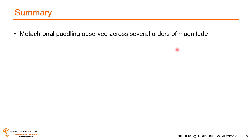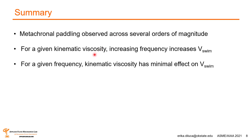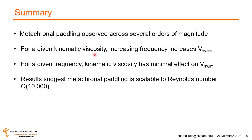In summary, we observed metachronal paddling across several orders of magnitude. For a given kinematic viscosity, increasing frequency increases swimming speed; for a given frequency, kinematic viscosity has minimal effect on swimming speed. Results suggest that metachronal paddling is scalable across Reynolds number magnitudes up to 10,000, allowing us to decrease the size of AUVs — as long as we maintain metachronal paddling, increase frequency, and keep kinematic viscosity constant. Thank you for coming to my talk.